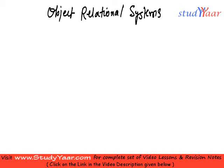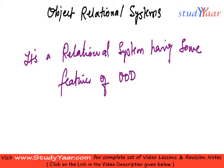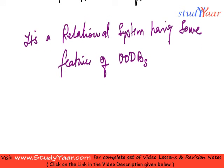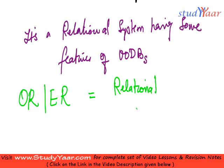In this session, we are going to understand object relational systems. An object relational system is a relational system in which some features of object-oriented databases are incorporated. So we can say that object relational, or extended relational, is equal to relational plus some object-oriented concepts.